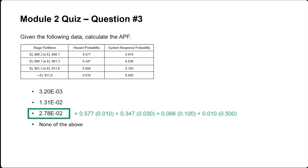We're taking the hazard probability from the first partition, multiplying it by its corresponding system response, and then so on and so forth — repeating for the second partition, the third partition, and the final one. Most everybody should be pretty good with the APF calculation given all the work we've done in the last couple modules.